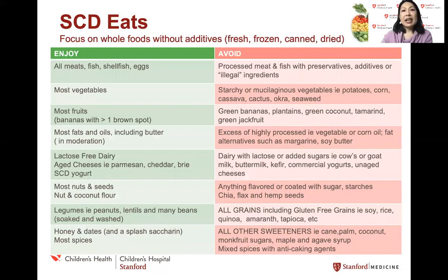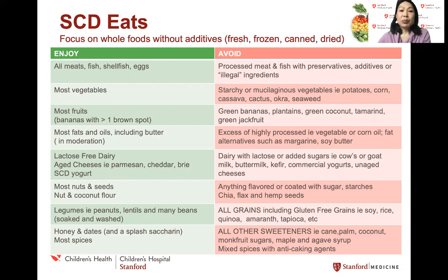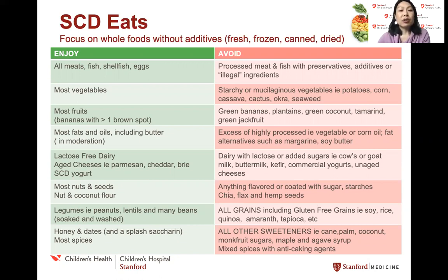So I will spend some time on what you can eat on the SCD, because this is really the gist of it. Like all diets used in the treatment of IBD, the focus is on eating whole foods without additives or preservatives. Though fresh foods are preferred, you can have allowed foods in any form, including frozen, canned, or dried. The first thing you can have is really all meats, fish, shellfish, and eggs. You must avoid foods that are processed or marinated with any illegal ingredients or have preservatives such as potato starch, sugar, or maltodextrin.